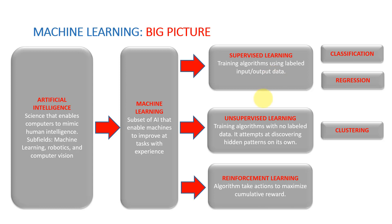Within supervised learning, it's mainly divided into classification — classifying images into certain classes — and regression. Regression is used to predict a continuous output. For example, I want to predict tomorrow's temperature: 25, 26, 27, or 28 degrees. There are no discrete classes; we have a continuous output. That's regression. Classification, on the other hand, involves classes like cats, dogs, and mice.